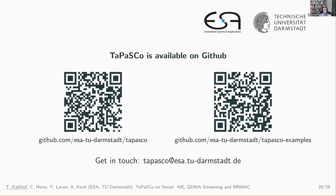To conclude, I presented the streaming-based features of our Tapasco framework for Versal devices and showcased how you can combine the AI engines with QDMA streaming and 100 gigabit Ethernet. We showed in our neural network case study that with our streaming feature we can outperform the A100 GPU, and I showed two hands-on examples on how to use Tapasco. Please check out our Tapasco GitHub and our example repository, and if you have any more questions you can ask them now or get in touch via email. Thank you for your attention.